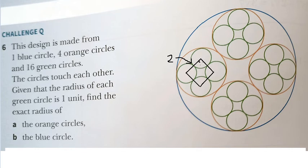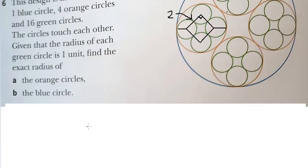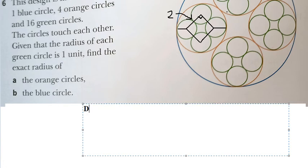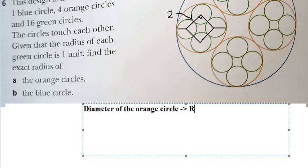Because they form a square, this angle should be 90 degrees. From this center to here is one unit. So if we want to find the radius of the orange circle, we need to find the diameter and then the radius of the orange circle.